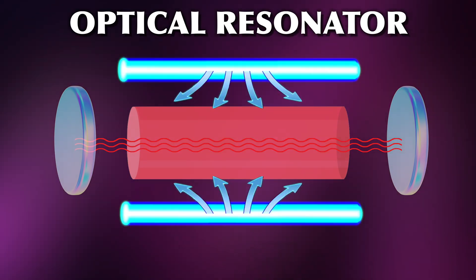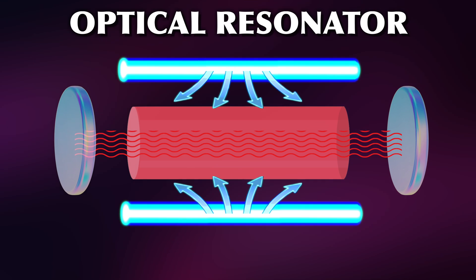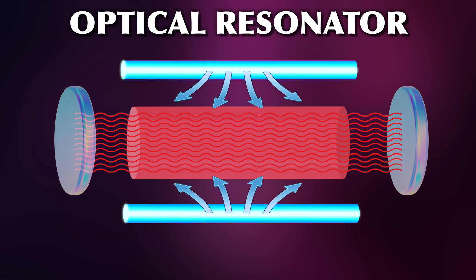We can also use the resonator to get rid of unwanted frequencies or modes, either by adding some optical elements which do just that or by designing the resonator dimensions in such a way that those waves will not be able to build out a standing wave but they will interfere out destructively.